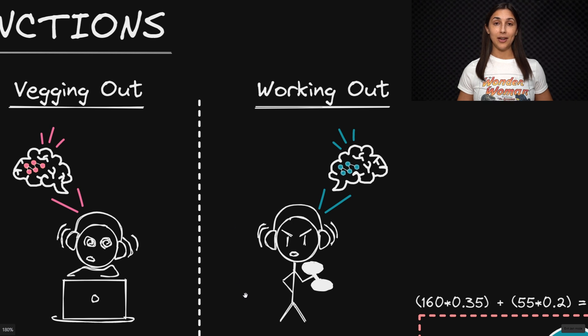Now on the right, we have another scenario where we are putting our bodies through physical stress by working out and exercising. And here we have a different group of neurons in our brain that are being activated by this particular type of activity.